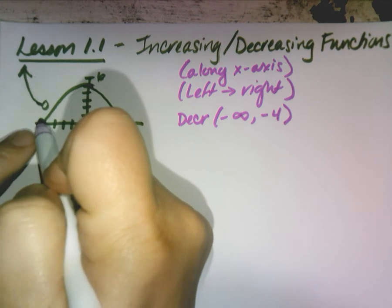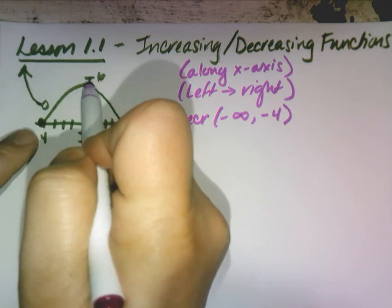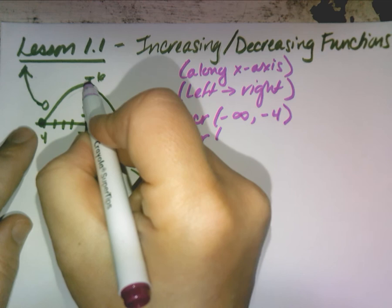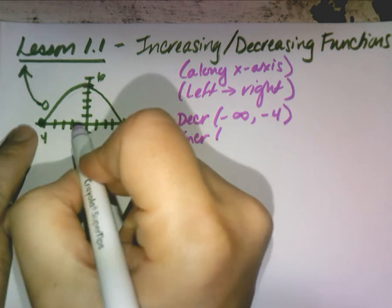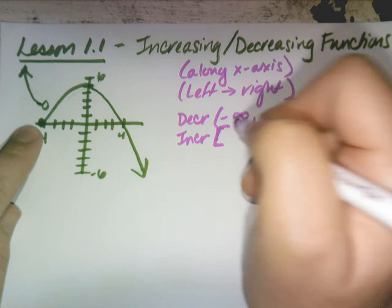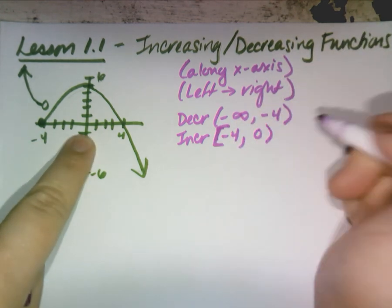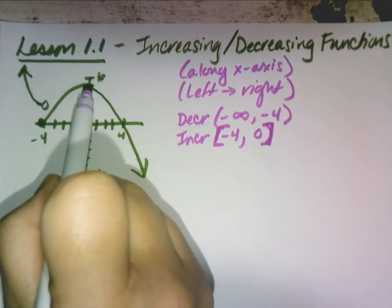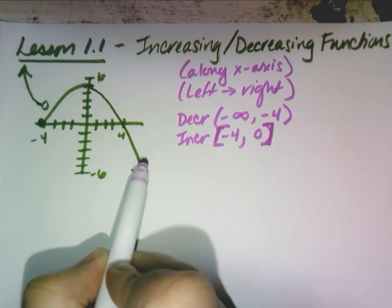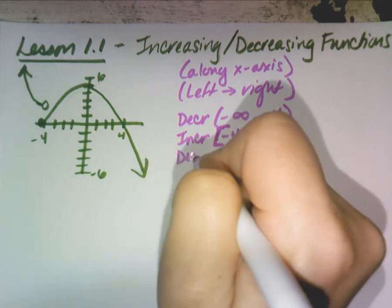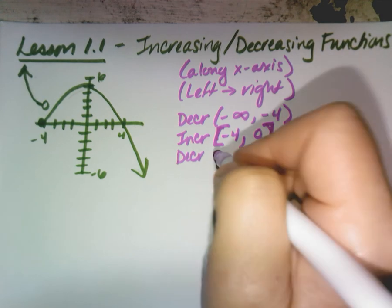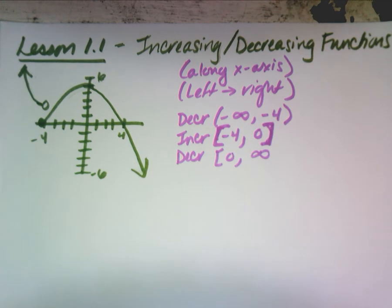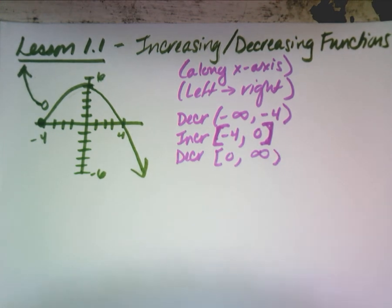Once I jump my pen, what am I doing now? Increasing until where on the x? Until zero. So I'm going to make this a bracket from negative 4 until zero on the x. Then what happens after that? Decreasing all the time. From zero to positive infinity — even though the pen is going down, along the x-axis it's positive.